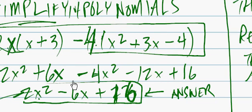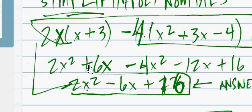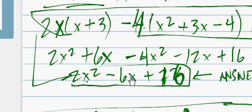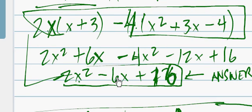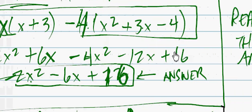So when I simplify this, 2x squared minus 4x squared is negative 2x squared minus 6x because negative 12x plus 6x is negative 6x, and then 16.